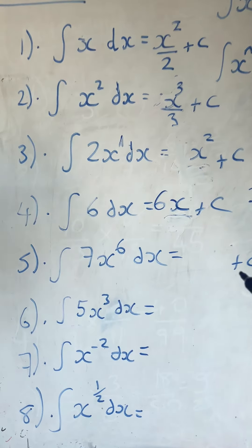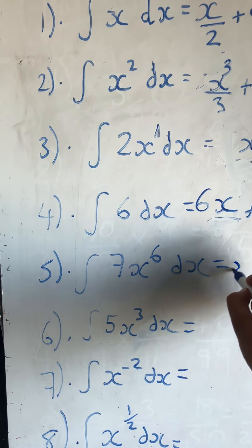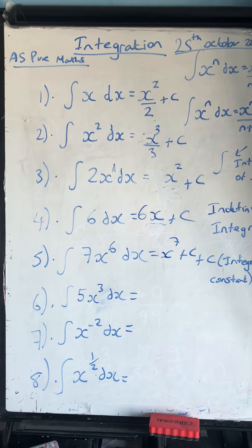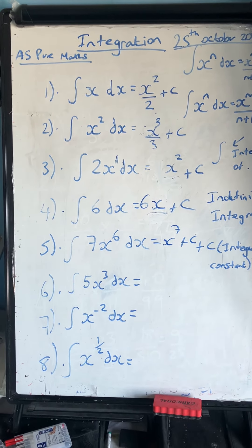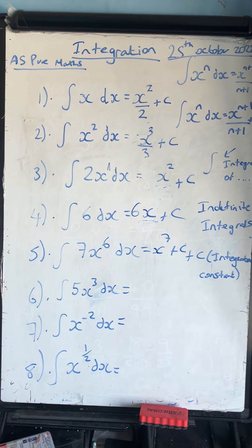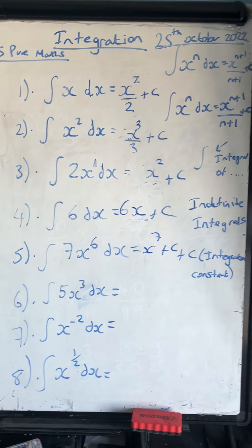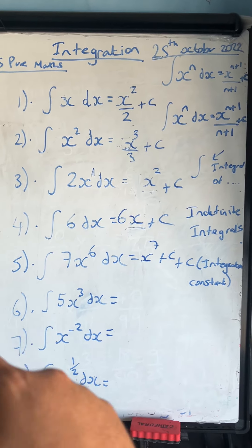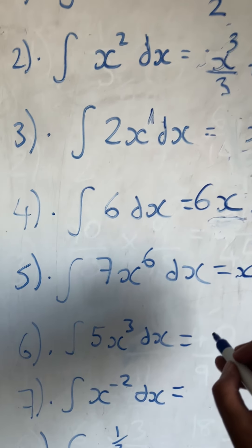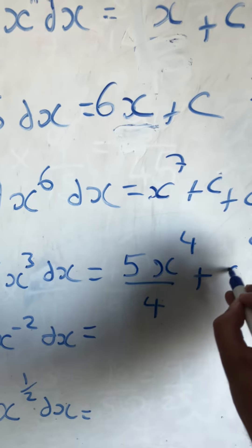Question 5: the integral of x to the 6 dx. Adding 1 to the power and dividing by the new power gives 7x to the 7 over 7 plus c. The 7's cancel, so the answer is x to the 7 plus c. Question 6: adding 1 to the power and dividing by the new power gives 5x to the 4 over 4 plus an integration constant c.